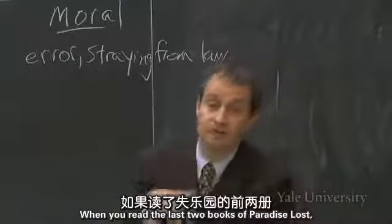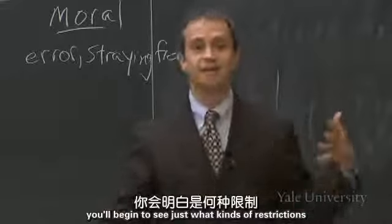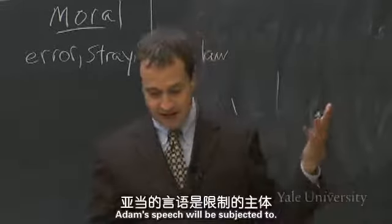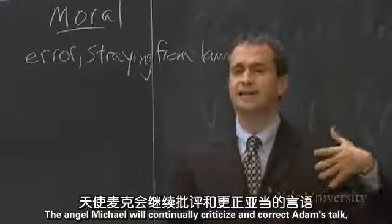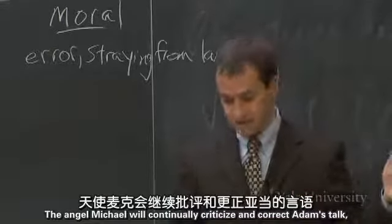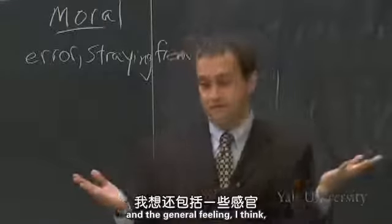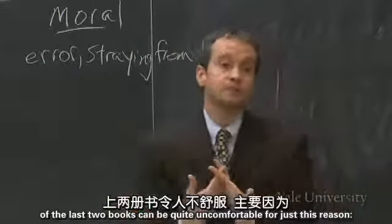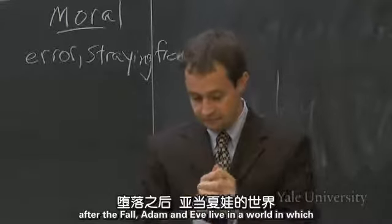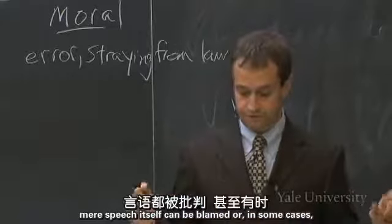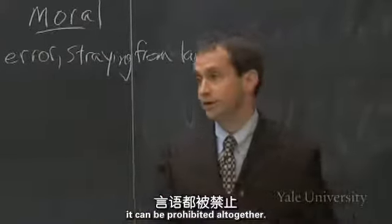When you read the last two books of Paradise Lost, you'll begin to see just what kinds of restrictions Adam's speech will be subjected to. The angel Michael will continually criticize and correct Adam's talk. The general feeling of the last two books can be quite uncomfortable for just this reason. After the fall, Adam and Eve live in a world in which mere speech itself can be blamed, or in some cases prohibited altogether.